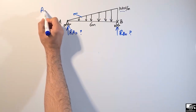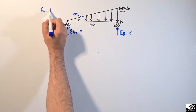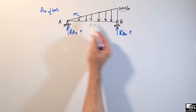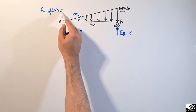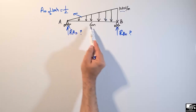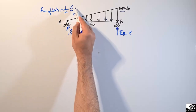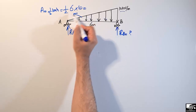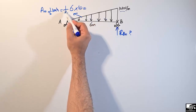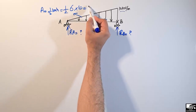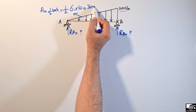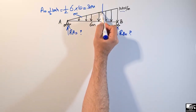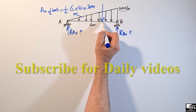We can find this using the area formula: Area = ½ × base × height, which is the area of a triangle. So ½ × base of 6 meters × height of 10 kilonewton per meter gives us 30 kilonewton. So 30 kilonewton is the total load acting on this beam at the centroid of the triangle.